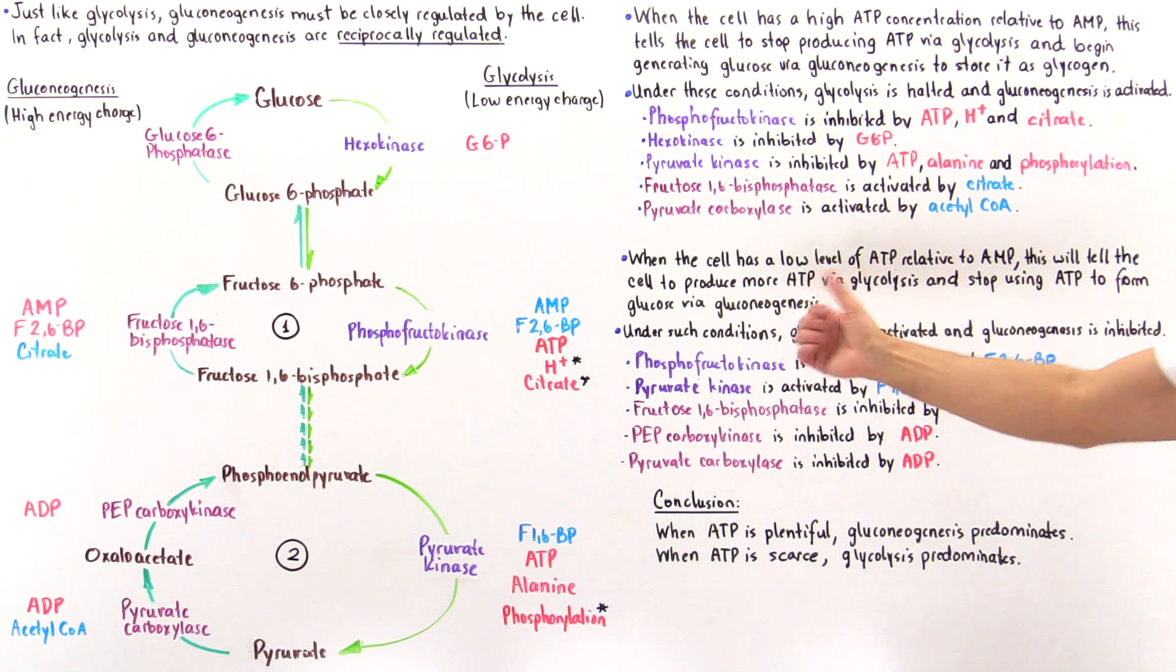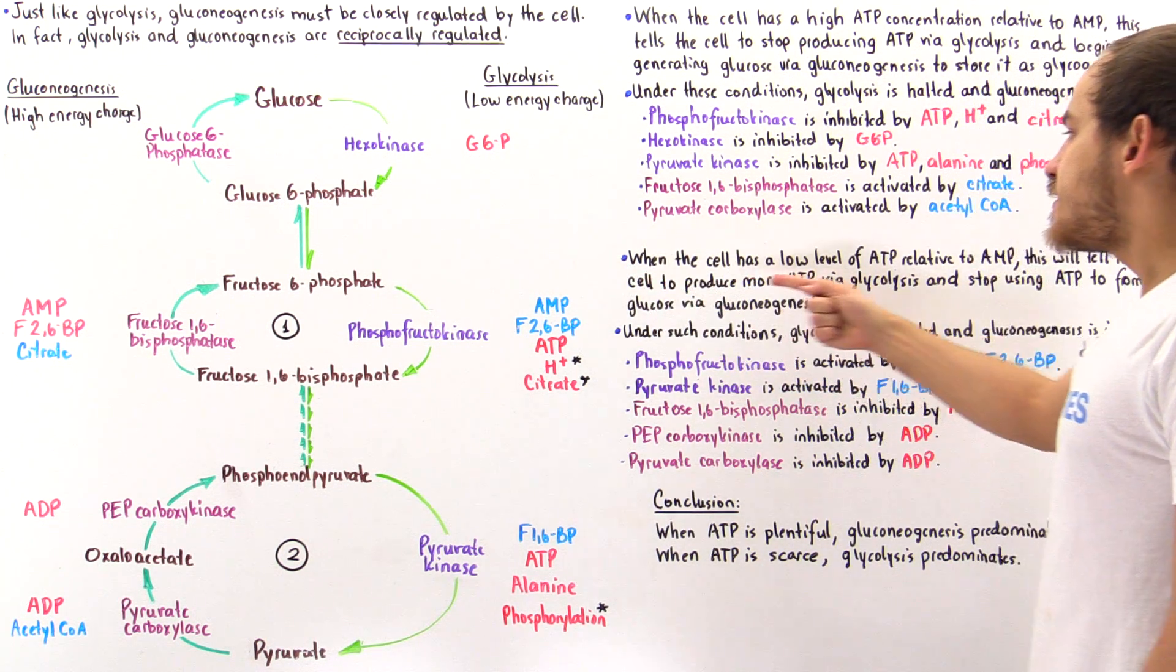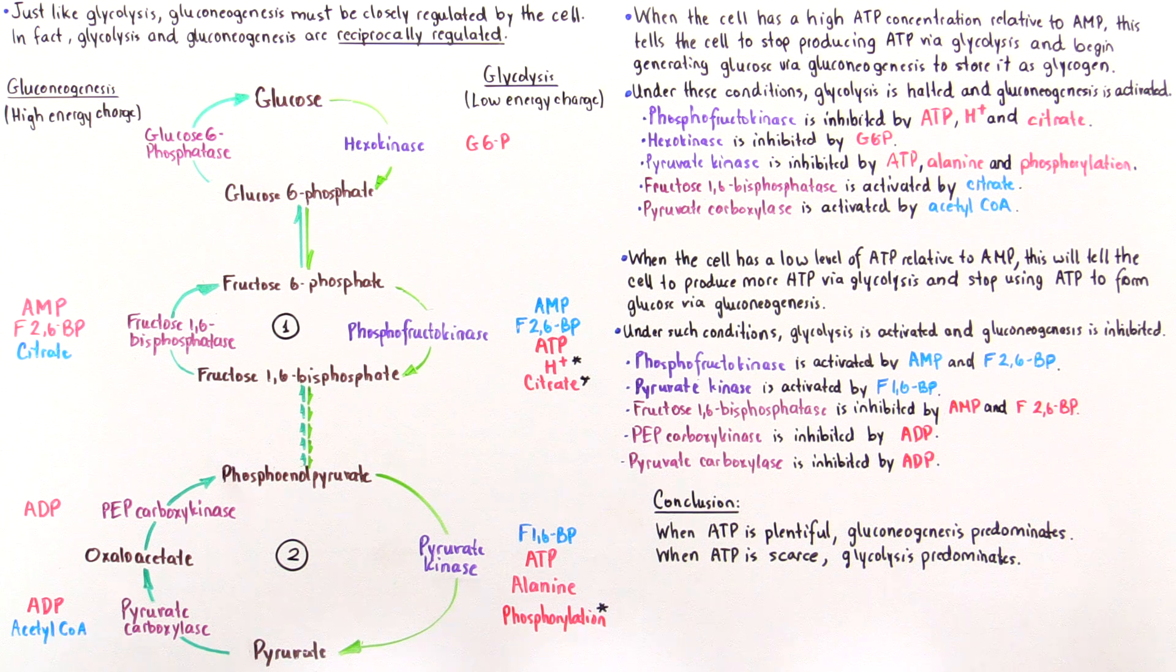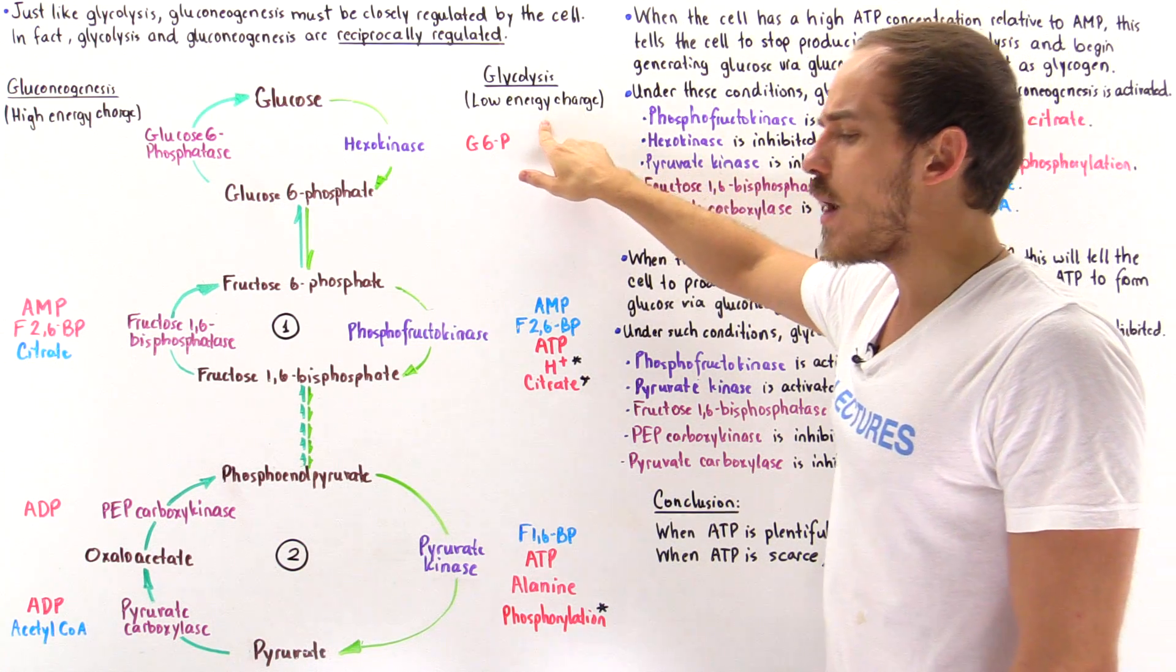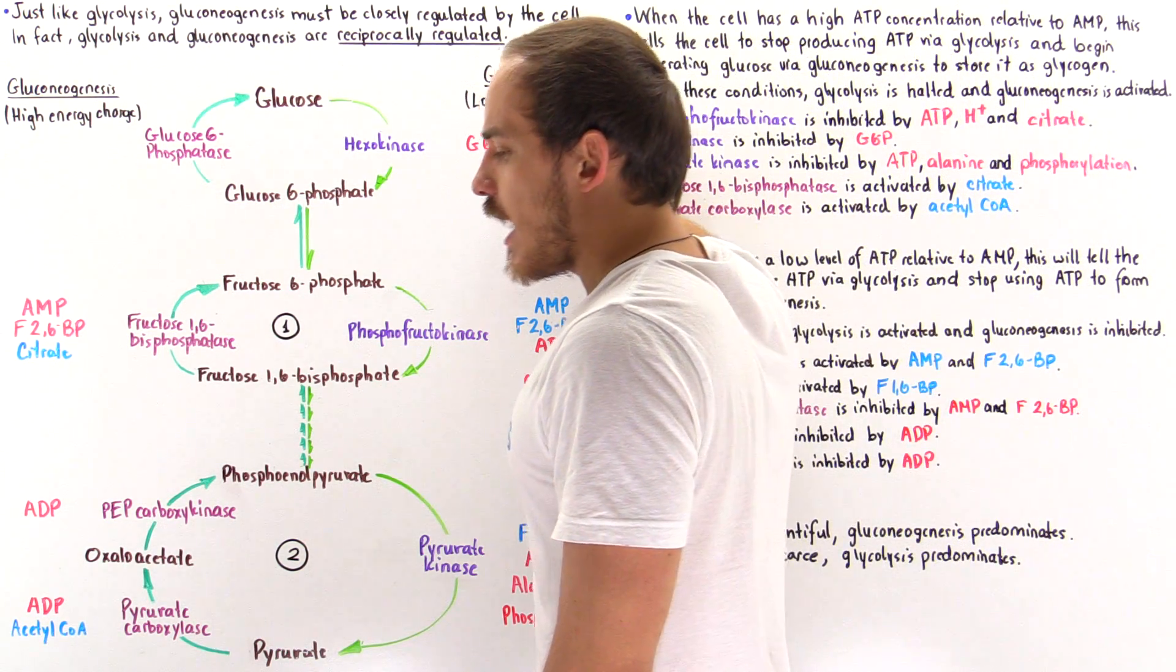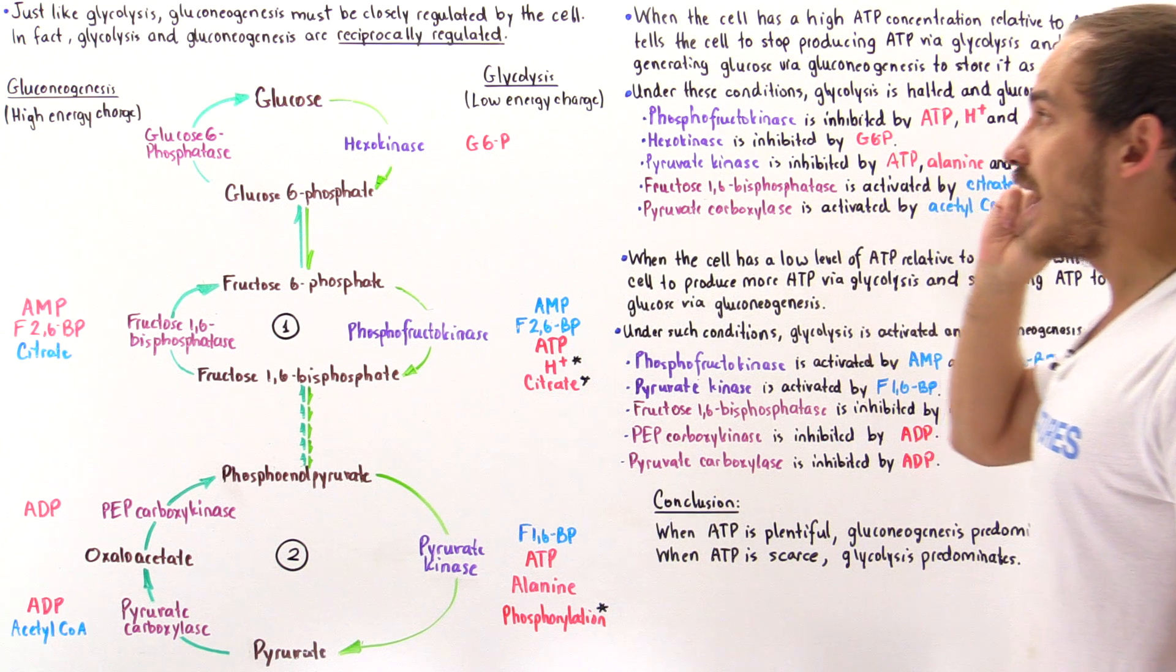So let's summarize our results. When the cell has a low level of ATP relative to AMP, that means it has a low energy charge and a relatively high amount of AMP.